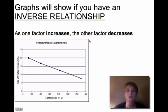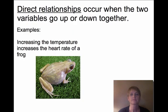Graphs will show us if we have an inverse relationship. That means as one factor increases, the other factor goes down. In this graph, it shows that the rate of photosynthesis goes down as light intensity increases. Direct relationships occur when the two variables go up or down together. An example would be if we increase the temperature of a frog's habitat, the heart rate of the frog is going to increase as well.